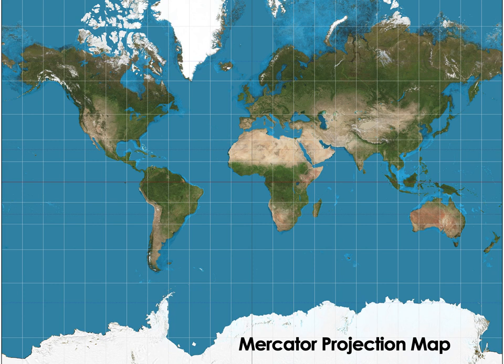Notice how the center of the Mercator map is Europe, because Europe is basically the center of the world in that worldview. Africa and the Americas are very accentuated. This map was designed to aid Europeans who want to cross the ocean — either going down to Africa to take part in the slave trade, or going to the Americas for raw materials. It shows north up and south down, and gets the shape of countries more or less correct, but the size is incredibly wrong.